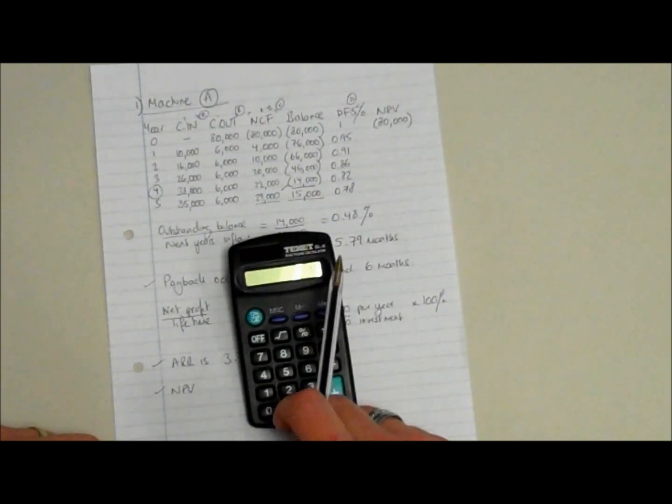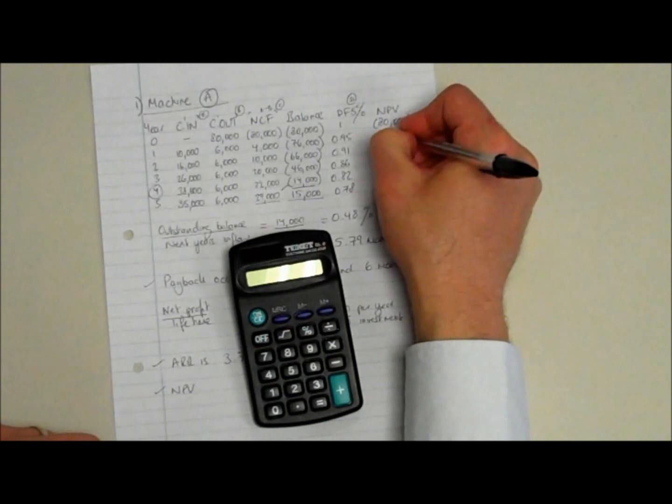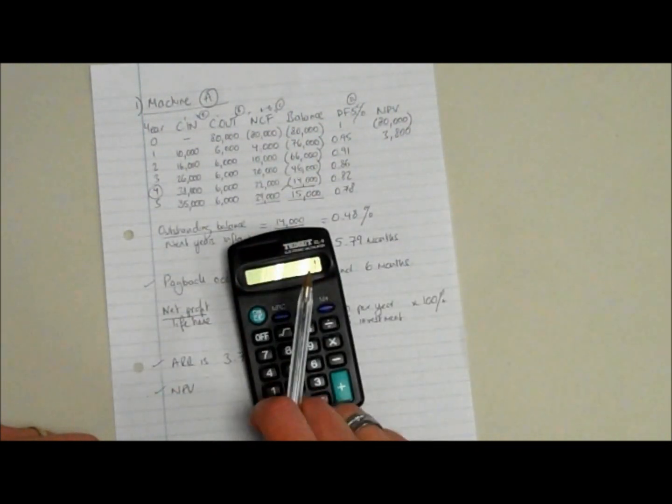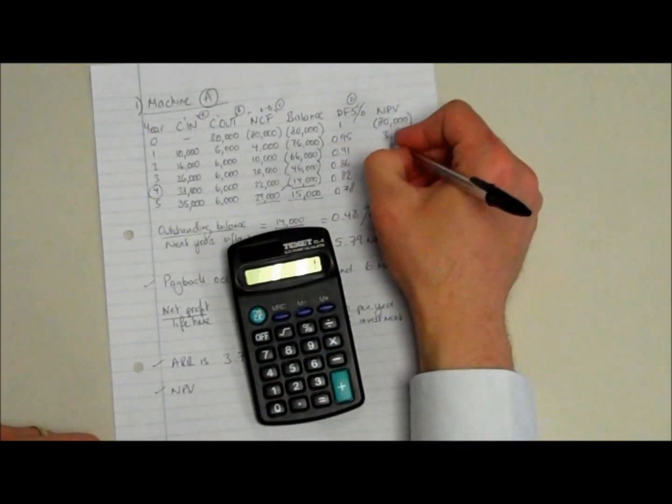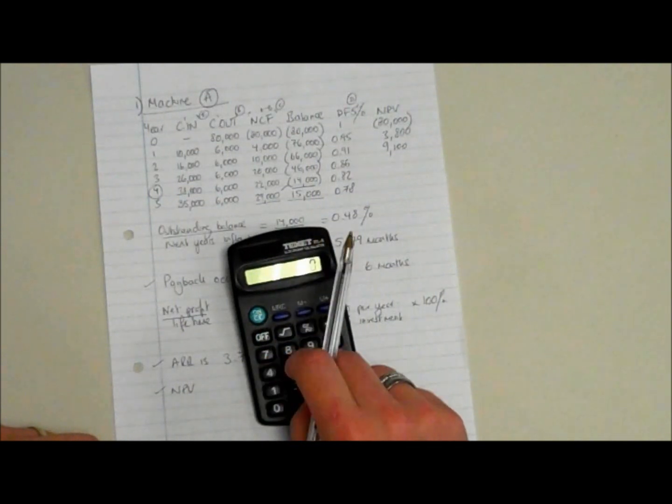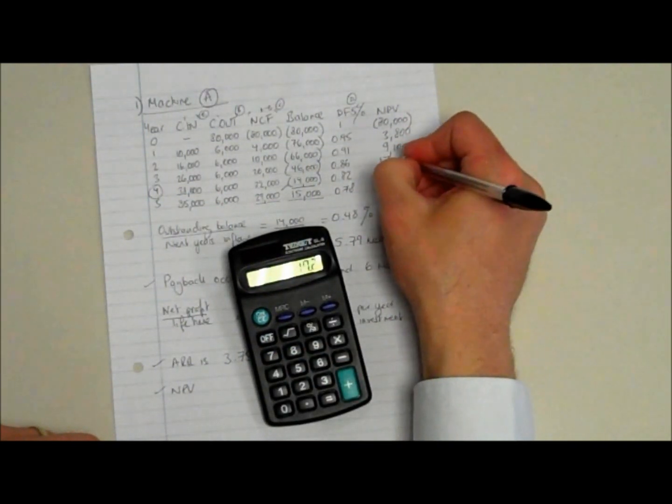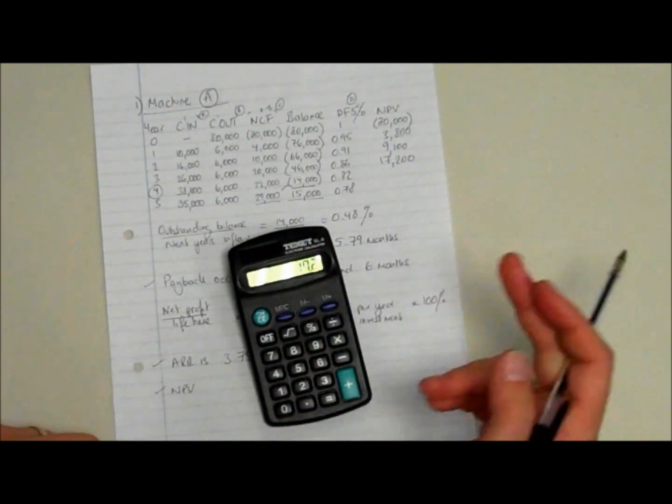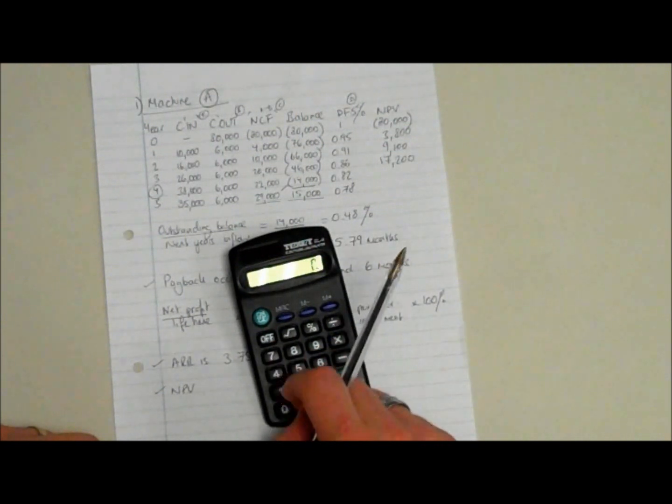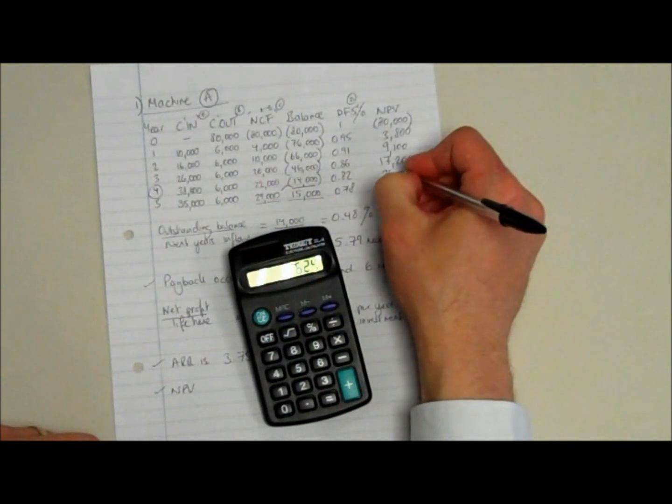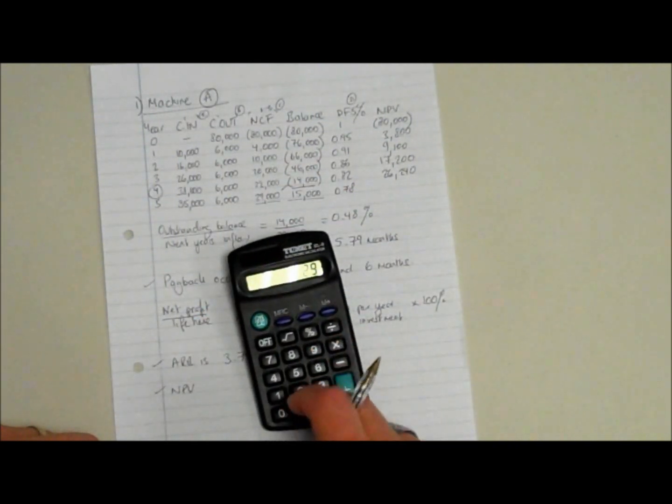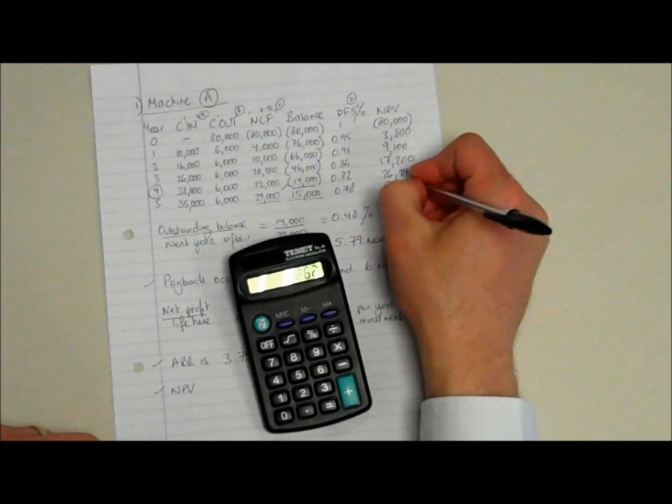The first one is 80,000, our negative cash outflow, times 1. That's a net 80,000 out. For year one, 4,000 times 0.95 gives us 3,800 pounds. Year two, 10,000 times 0.91 is 9,100. Year three, 20,000 times 0.86 is 17,200. Year four, 32,000 pounds times 0.82 is 26,240. And year five, 29,000 times 0.78 is 22,620 pounds.